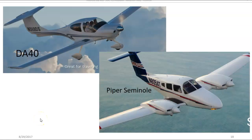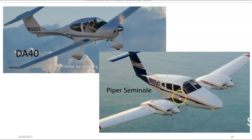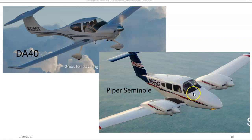Here you see a couple of examples of airplanes actually flown at the Middle Tennessee State University Flight School. The top left is a Diamond DA-40, which is used for private pilot training, instrument training, and commercial training. On the right side is a Piper Seminole — a multi-engine aircraft used for multi-engine ratings and to train multi-engine instructors. As it applies to airman certification, the Diamond DA-40 is airplane category, single engine land class. The Piper Seminole is airplane category, multi-engine land class.